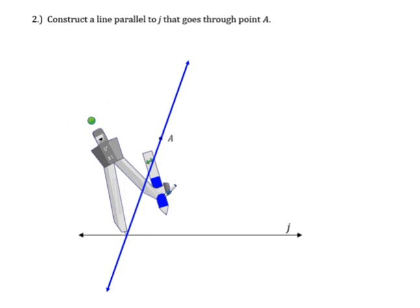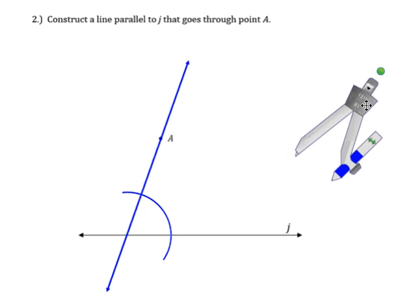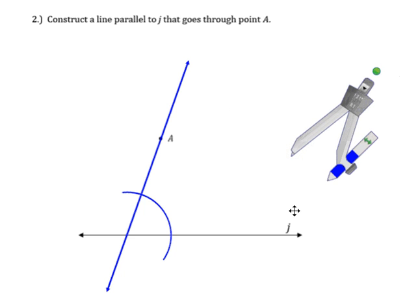draw an arc. Don't make it too big, you don't want to go all the way up to A or past A. We just draw an arc intersecting the transversal and line J.